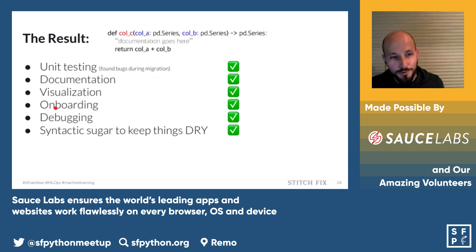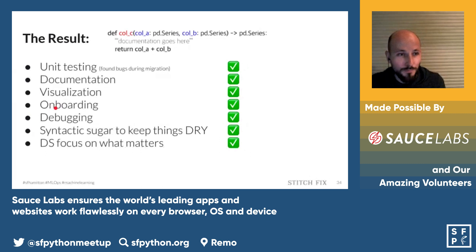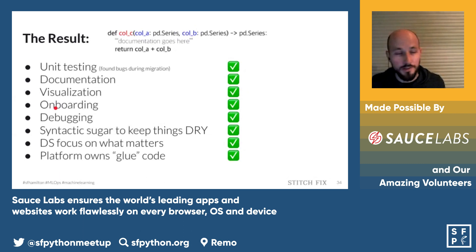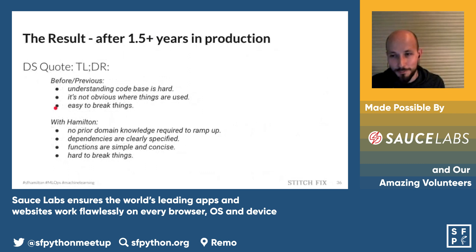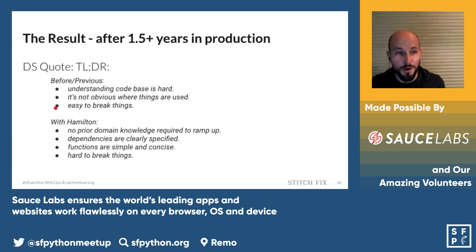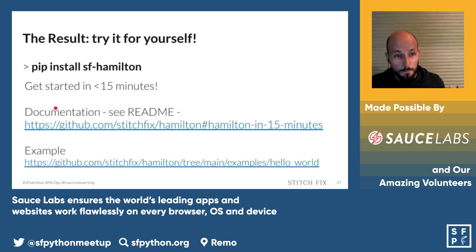You might notice that a one-line pandas operation now spans about three lines as a function. We do have decorators and syntactic sugar to keep things DRY. The end result is that the team at Stitch Fix gets to focus on what matters — creating functions and getting operational forecasts — without worrying about how everything is stitched together. A data scientist who onboarded onto the team noted that compared to previous experiences, Hamilton made it easy to ramp up with no prior domain knowledge, since dependencies are clearly specified and functions are simple and concise.